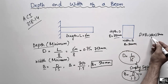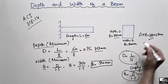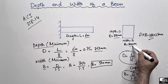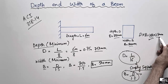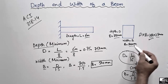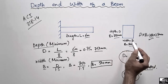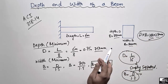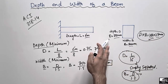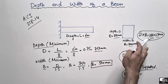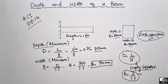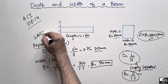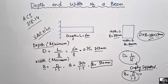In this case our depth is 750 mm, which is greater than 250 mm, and our width of 500 mm is also greater than 250 mm. So both dimensions exceed the minimum code requirement, meaning our beam is safe according to these dimensions. Hope you guys understand — don't forget to subscribe and thank you for watching.